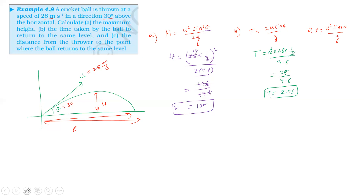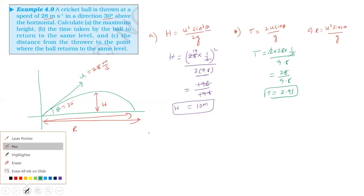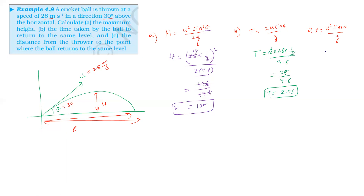Next, the range: R = u² sin2θ / g. U is 28 squared, sin 2 × 30 = sin 60 = √3/2. So 28 squared into sin 60 root 3 divided by 2, divided by g = 9.8. The range is approximately 69 meters.